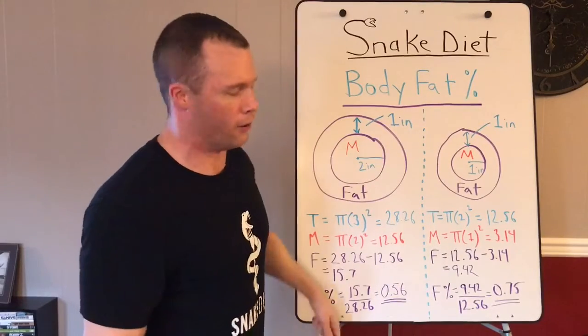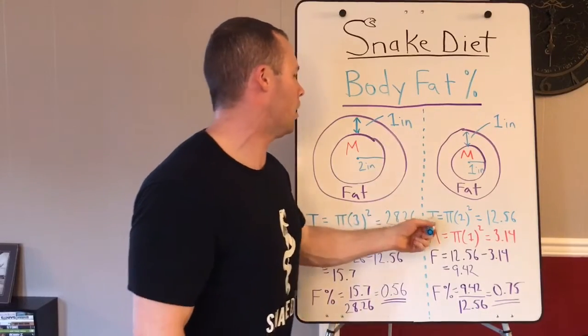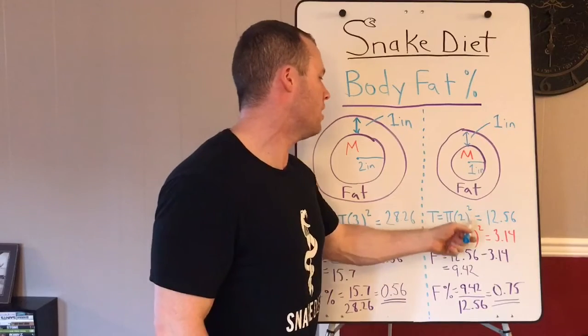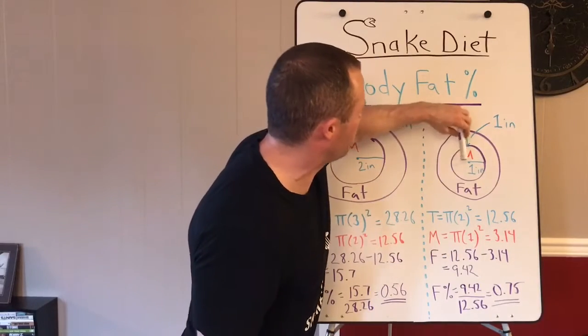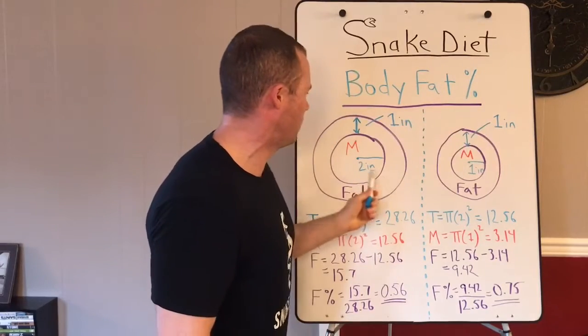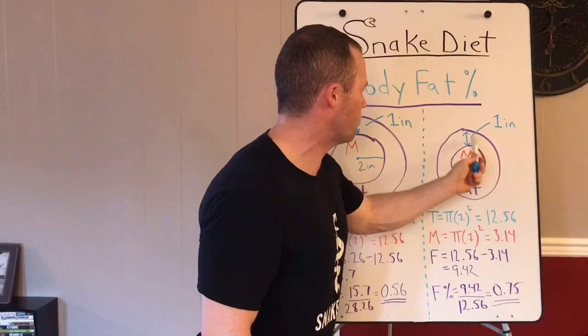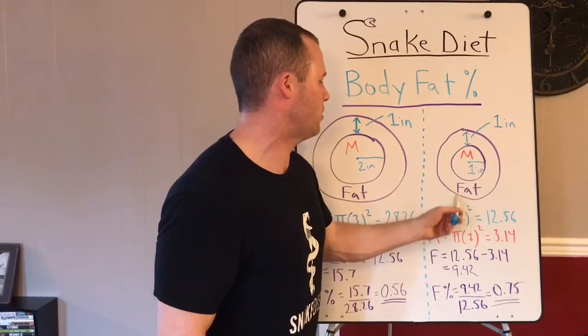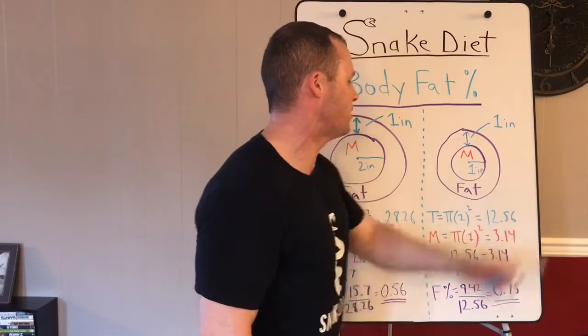So total area is pi r squared, same thing, but the radius of the muscle on the little guy is only one inch versus two inches. So one inch plus one inch for the thickness gives us pi times two squared equals 12.56 for the total area of the little guy.